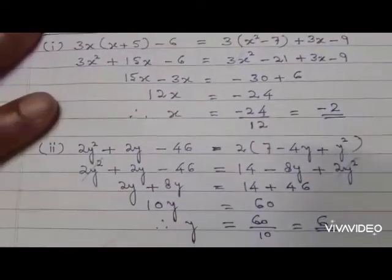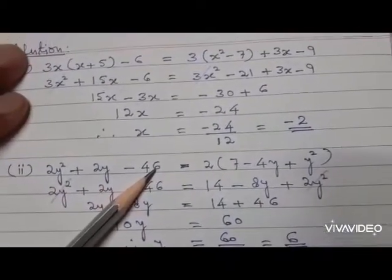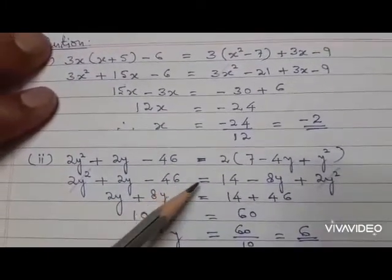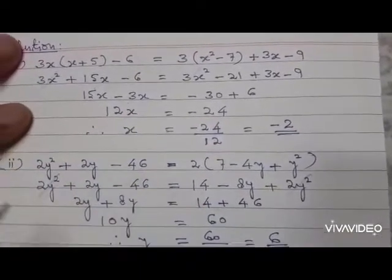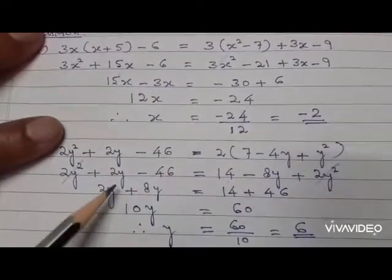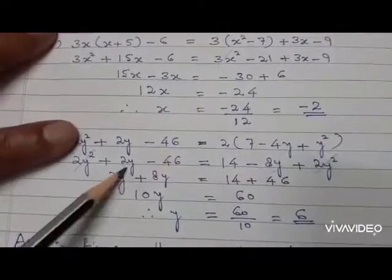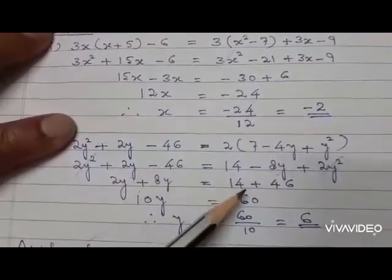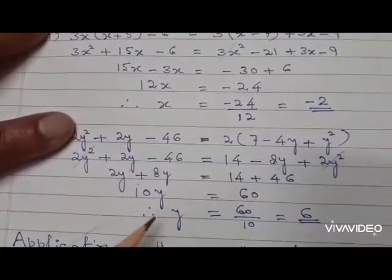The second equation: 2y² + 2y - 46 = 2(7 - 4y + y²). After multiplying we get 14 - 8y + 2y². The 2y² cancels from both sides. Bringing the y terms together: 2y + 8y gives 10y. The constant -46 goes to the right as +46. So 10y = 60, giving y = 60/10 = 6.